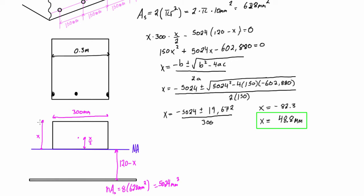So x equals 48.8 millimeters — that is the compression zone height. That means 120 minus x equals 120 minus 48.8, which is 71.2 millimeters — the distance from the neutral axis down to the steel rods.